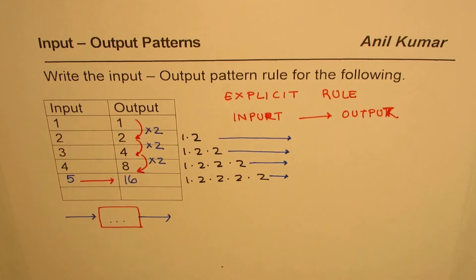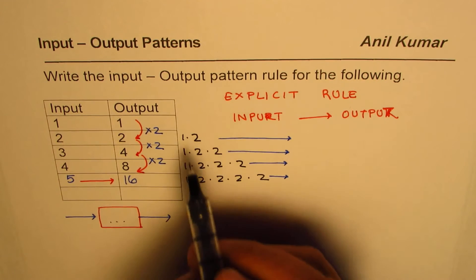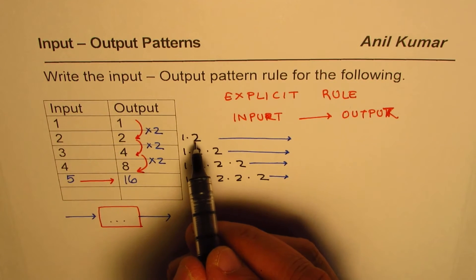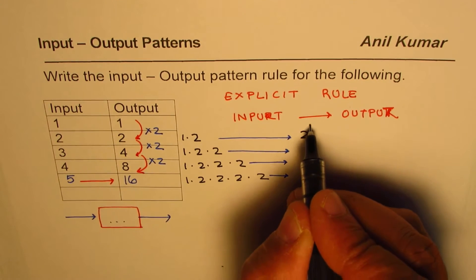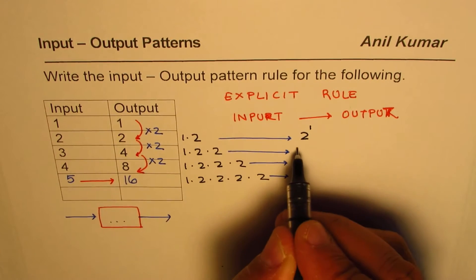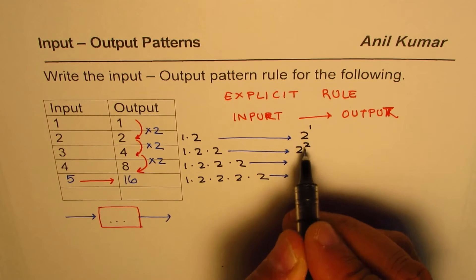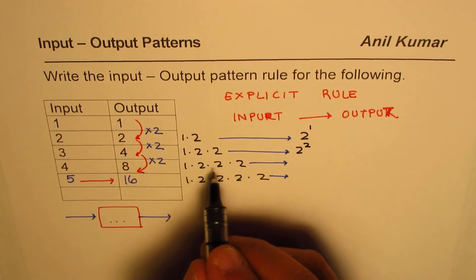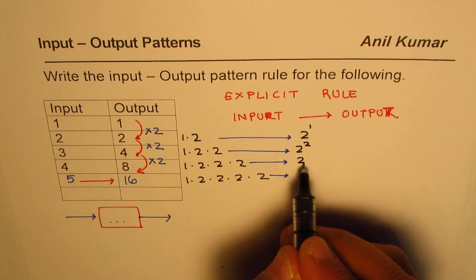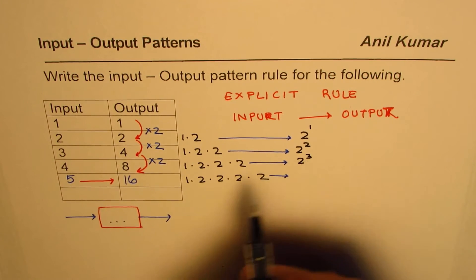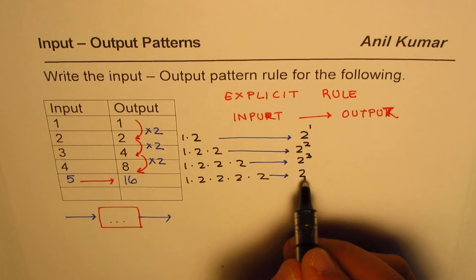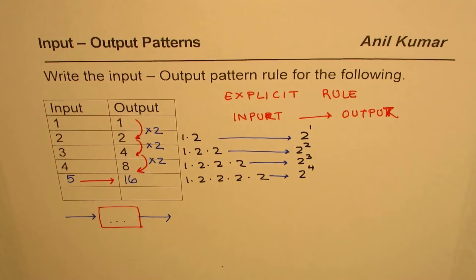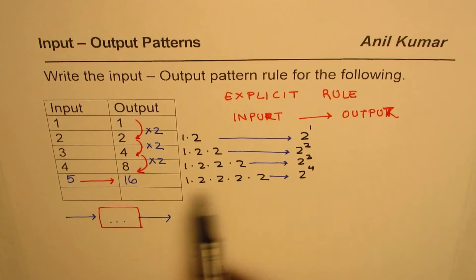Let's go further and write each of these numbers in exponent form. We'll write this as 2 to the power of 1, since there is one 2. Where there are two 2s, it is 2 to the power of 2. Then 2 times 2 times 2 is 2 to the power of 3. And 2 times 2 times 2 times 2 is 2 to the power of 4, which equals 16.